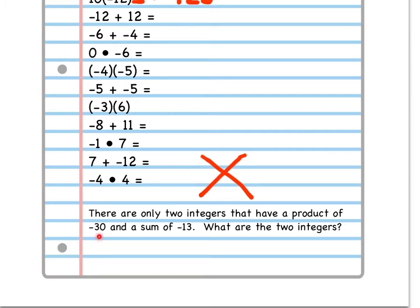And I'm going to keep this product negative 30. And instead of the sum being negative 13, which you guys have to figure that one out, we're going to have a sum of positive 1. So you have to figure out what are the two integers. Well, I know that one number has to be negative and one number has to be positive. And I know that their difference, because since one is positive and one is negative, I know that the difference has to be positive.